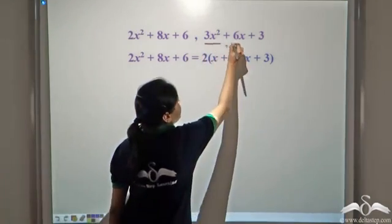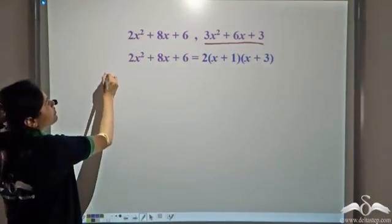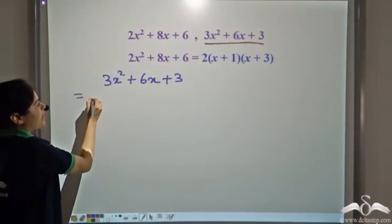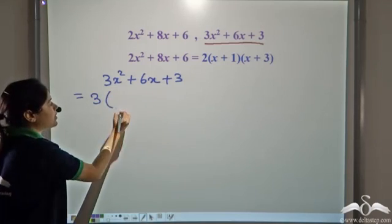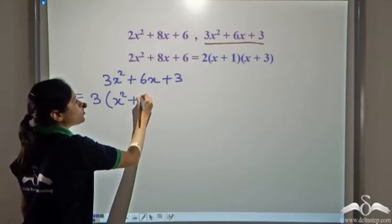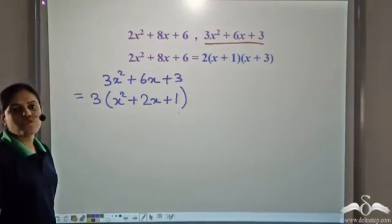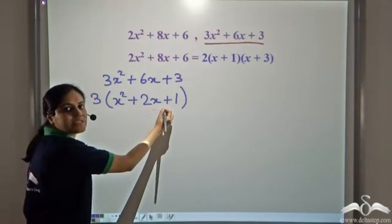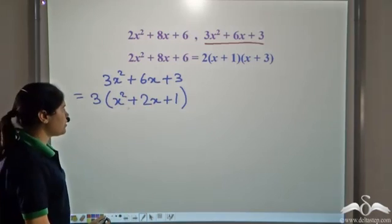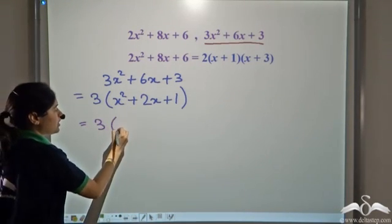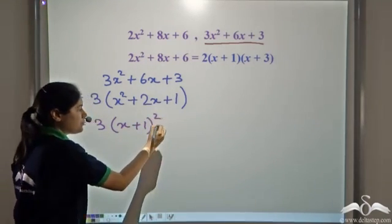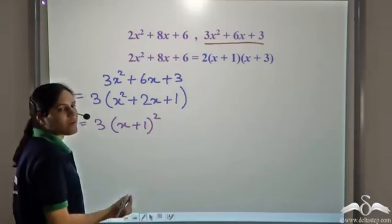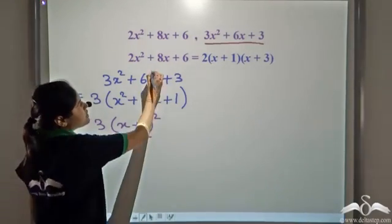Now let us factorize 3x² + 6x + 3. Since 3 is a common factor of all terms, we factor out 3 to get x² + 2x + 1. This is a perfect square: x² is x whole square, 1 is 1 whole square, and 2x is 2 × x × 1. So it fits the form (a + b)², and we can write it as 3(x + 1)². That is the factorized form of this expression.